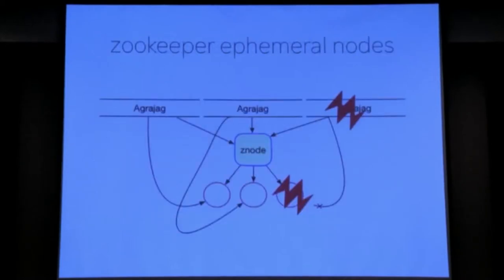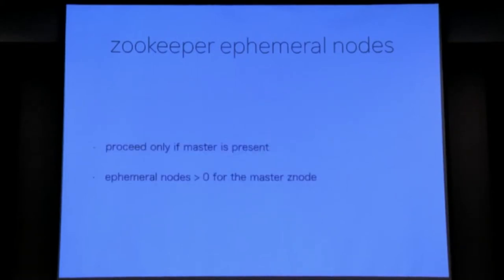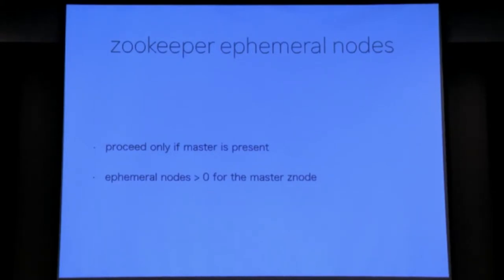You can ensure the master isn't stale by using ephemeral nodes. If one of the AgriJag instances goes down, it disconnects the ephemeral node. We store the master information in a persistent node on ZooKeeper, and we have ephemeral nodes as children of those master nodes — whenever AgriJag does something, it attaches an ephemeral node for itself. If AgriJag goes down, that ephemeral node goes down. So if you have zero ephemeral nodes on a master node, it means AgriJag is not running and your master information is probably wrong. You can make a check: proceed only if master is present and ephemeral node count is greater than zero.